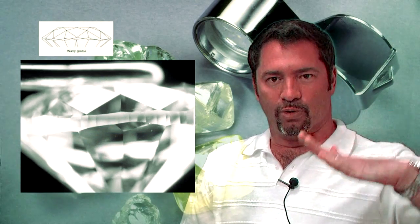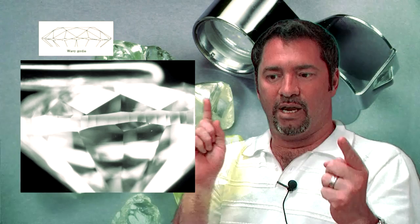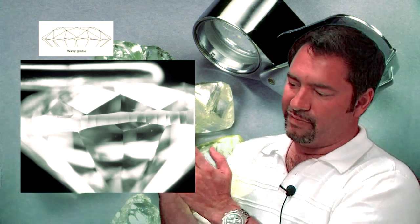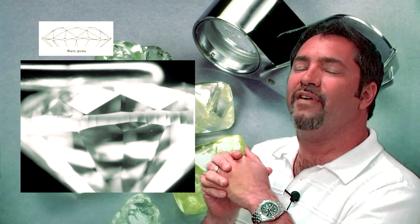Lastly, here is a wavy girdle. The girdle or rim of the diamond should be an even roundness as it goes around the stone. Usually when there's a wavy girdle, you'll also have misshapen facets and other features that are wrong with the stone.